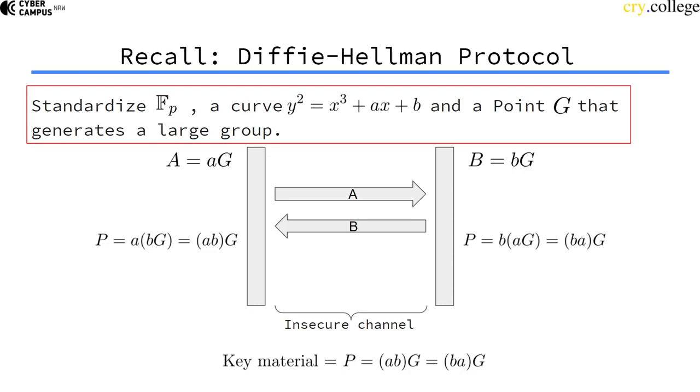As we've seen with elliptic curve Diffie-Hellman, we need a standardization of a finite field, a curve equation or curve parameters, and a generator point that generates a large group or subgroup.